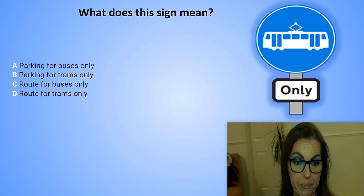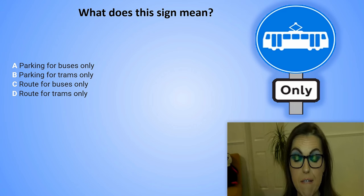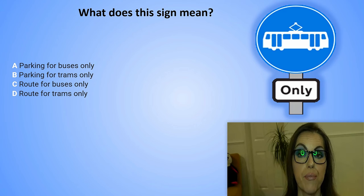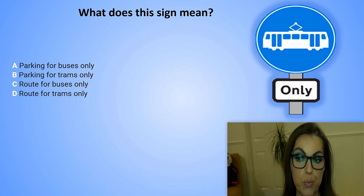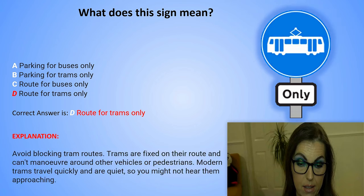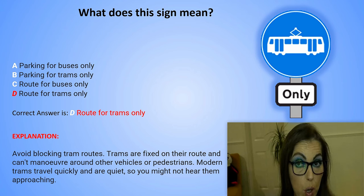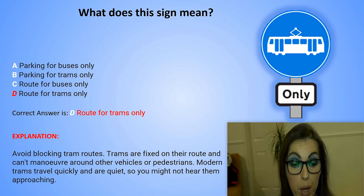What does this sign mean? A. Parking for buses only. B. Parking for trams only. C. Route for buses only. Or D. Route for trams only. The correct answer is D. Route for trams only. Explanation: Avoid blocking tram routes. Trams are fixed on their route and cannot manoeuvre around other vehicles or pedestrians. Modern trams travel quickly and they are quiet, so you might not hear them approaching.